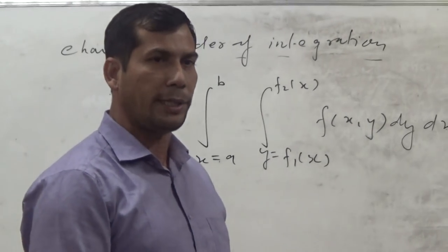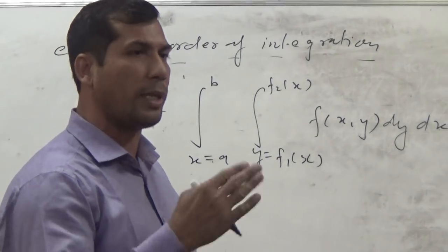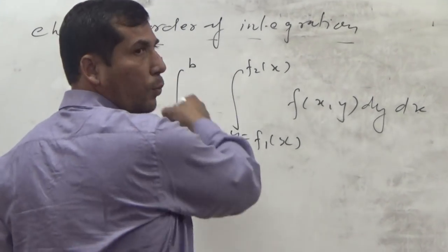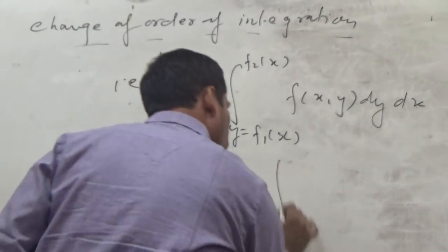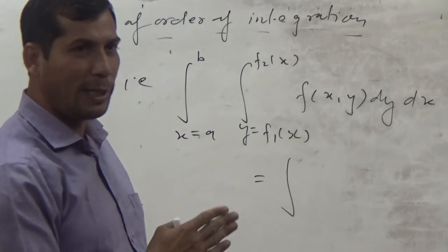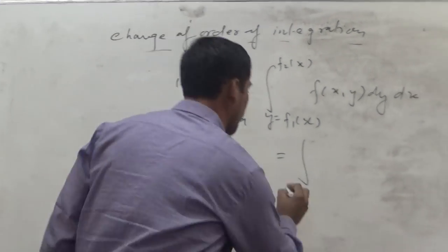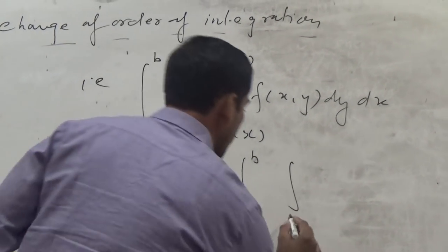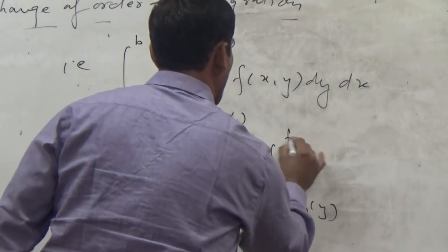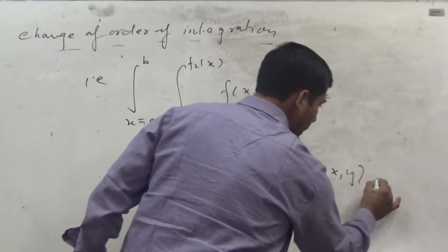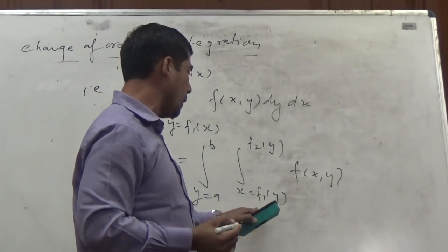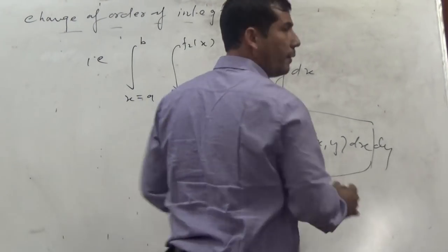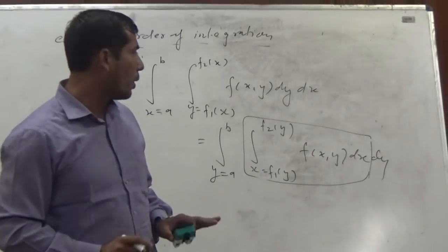What does change of order of integration mean? We will change the limits and change the strip direction. After changing the order, the first integration — which now has constant limits — will be for y, from a to b. The second integration for x will go from x = f1(y) to f2(y), and the same f(x,y) is integrated first with respect to x and then with respect to y.